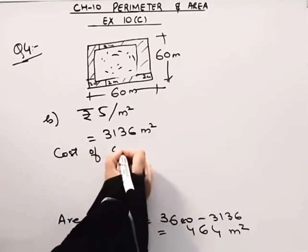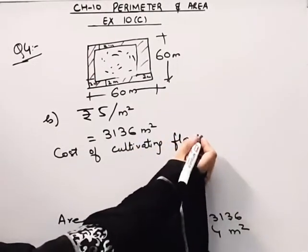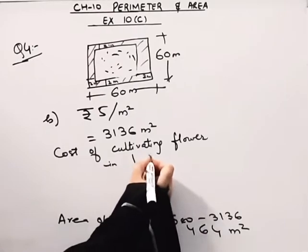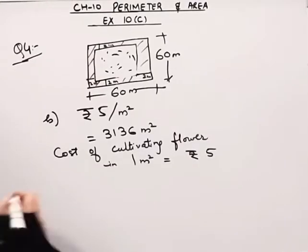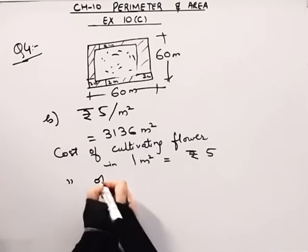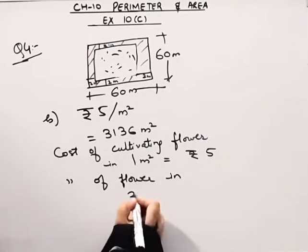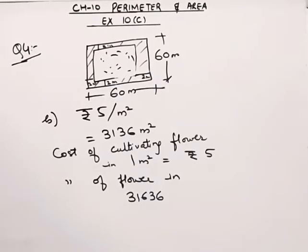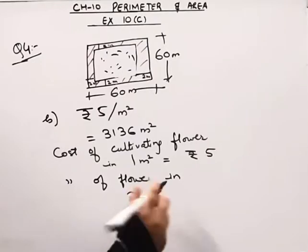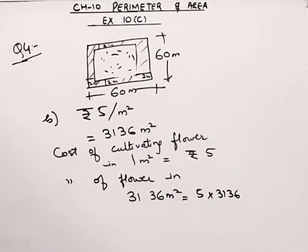The cost of cultivating flowers in 1 meter square is equal to rupees 5 — the cost is given as rupees 5. That means the cost of cultivating flowers in 3136 meter square will be 5 into 3136.